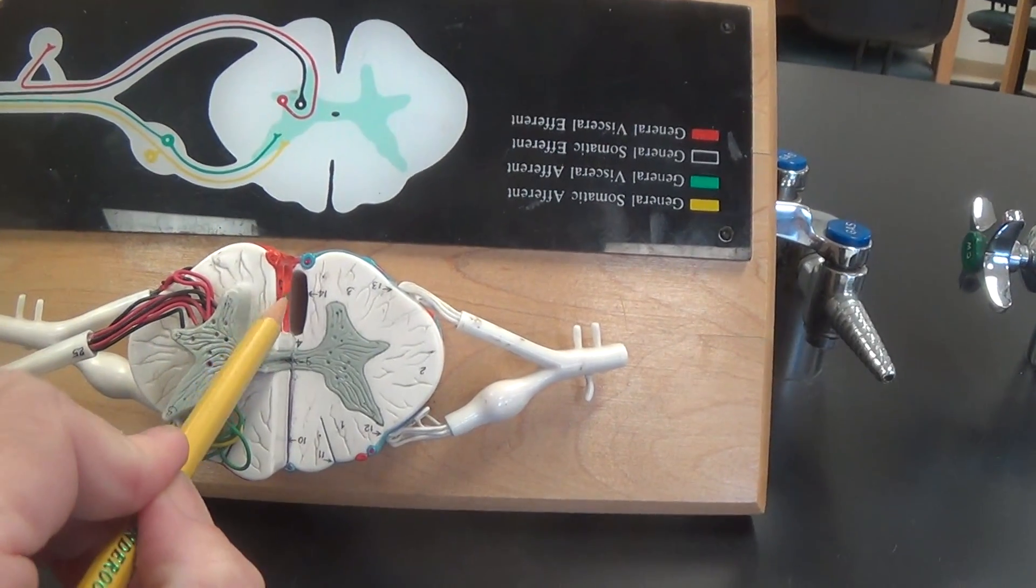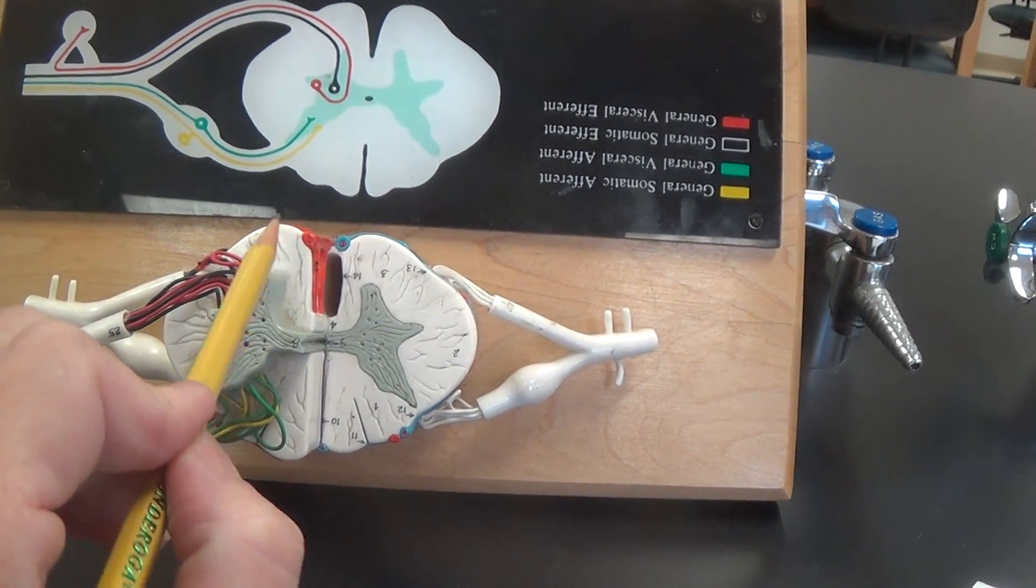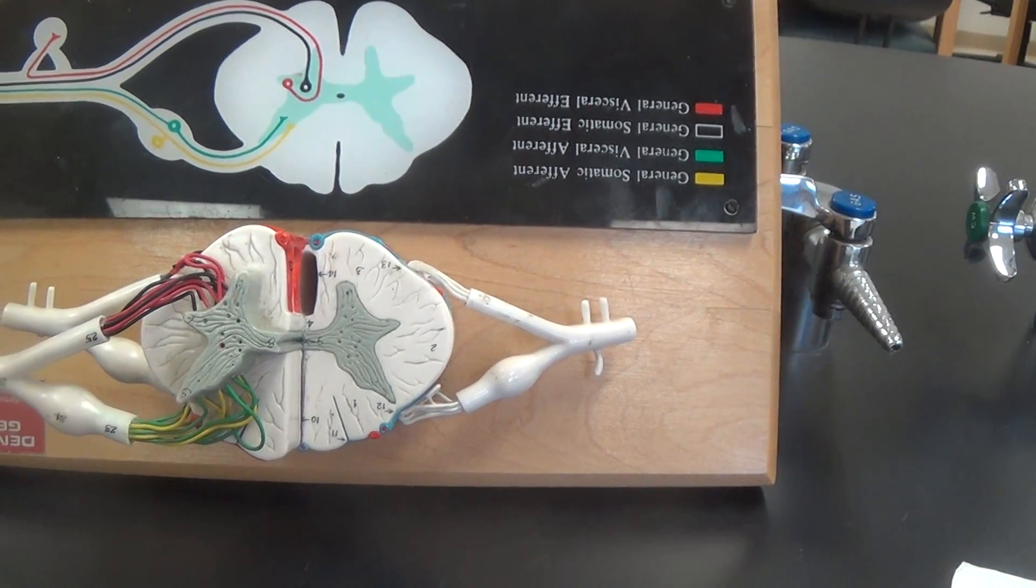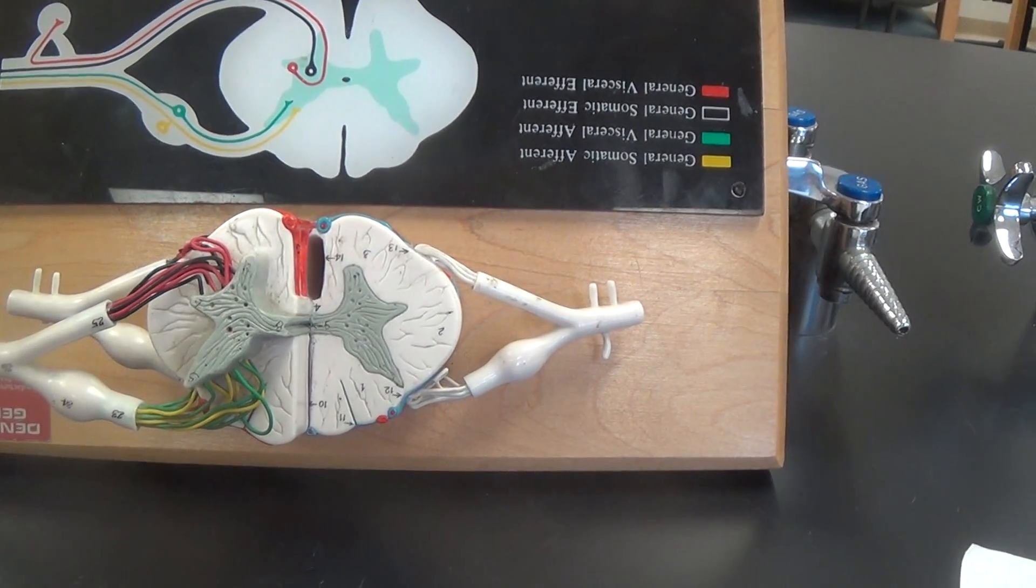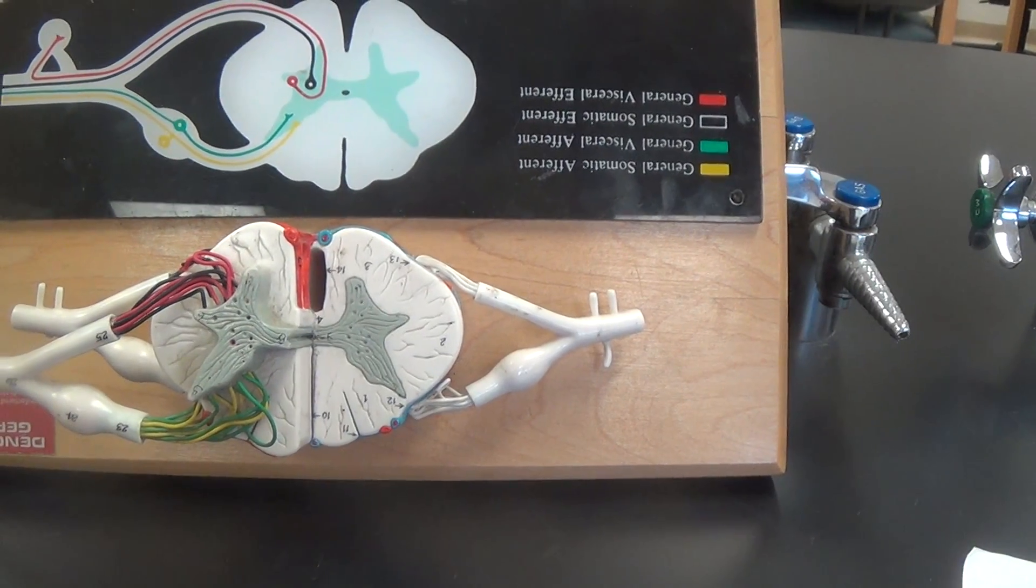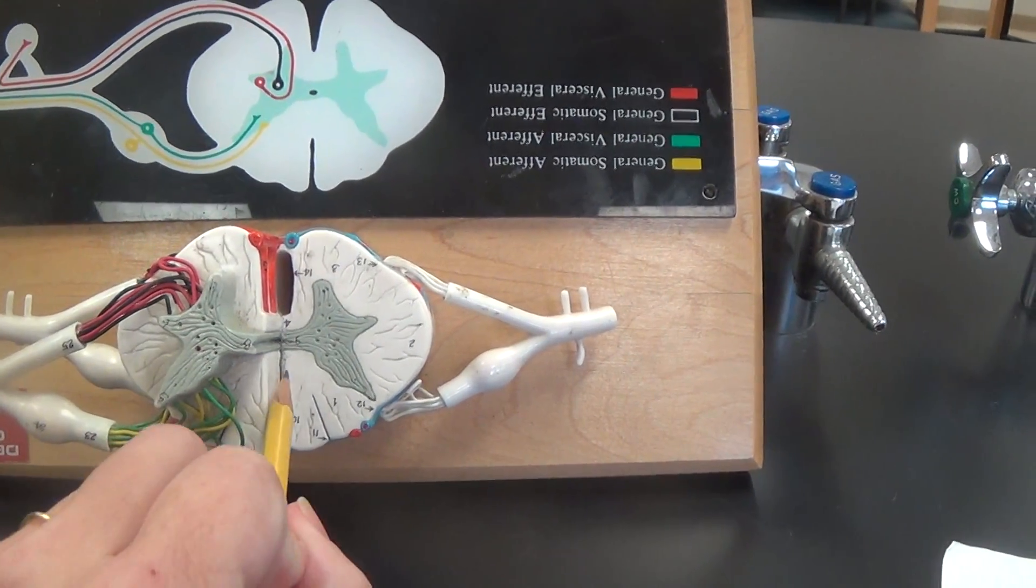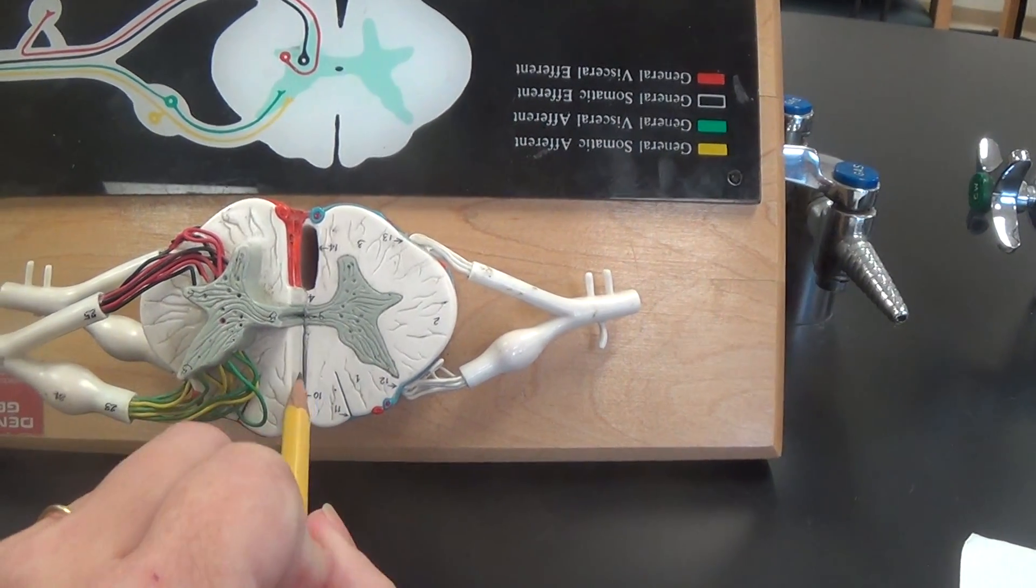This opening that we see here according to our lab packet is the anterior median fissure. If you find another name in another textbook or another source it is not the end of the world. Down here we have the posterior median sulcus.